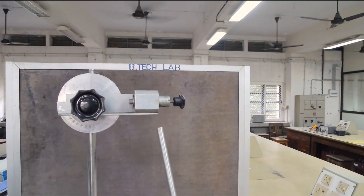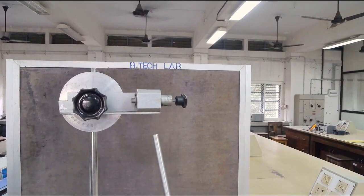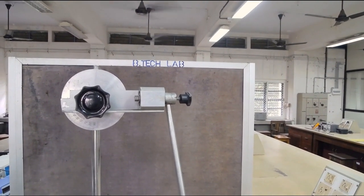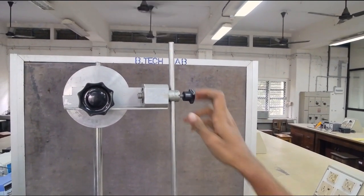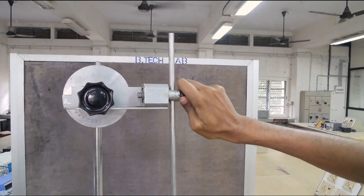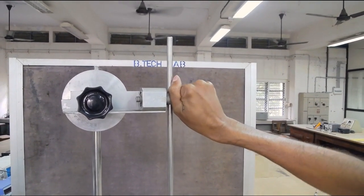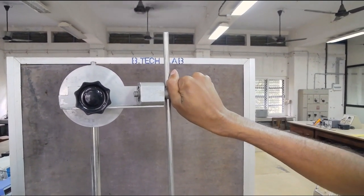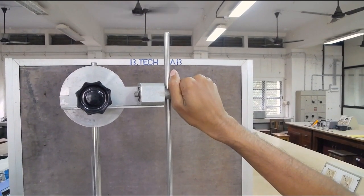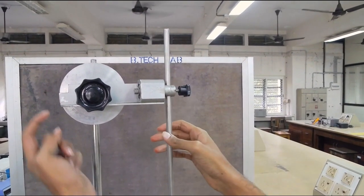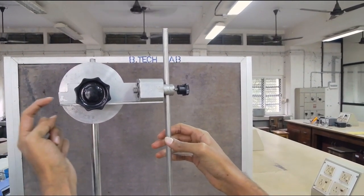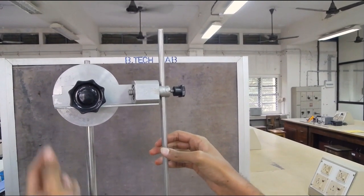Now attach the rod to the stand and tighten the knobs. There is also a knob to adjust the plane of oscillation with an angular scale. Make sure that the rod is aligned vertical.